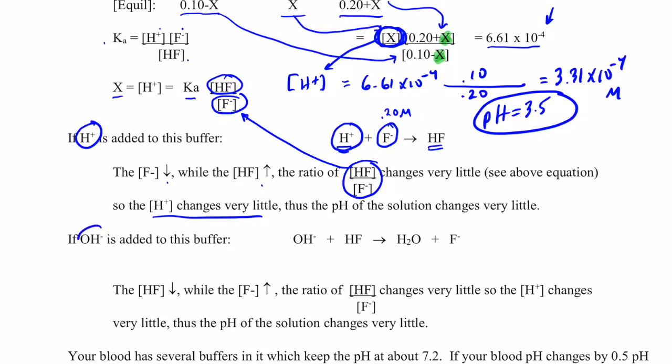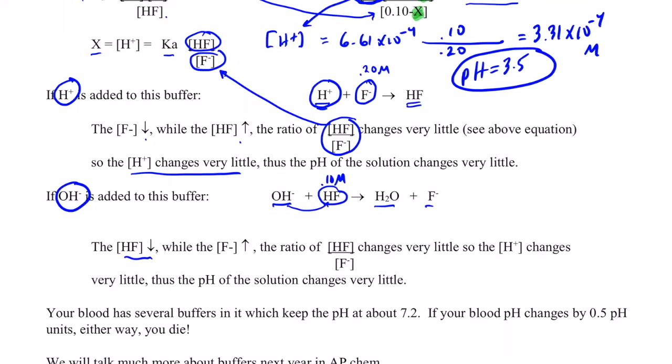Now, what if I added hydroxides to this buffer? Well, if I add hydroxides, remember, my buffer has a weak acid in it as well. In fact, it had 0.10 molar hydrofluoric acid in it. So the hydroxides will react with those HFs to form water and F negatives. In effect, this HF will gobble up those hydroxides and buffer the effect.